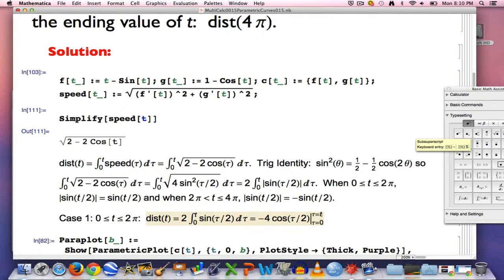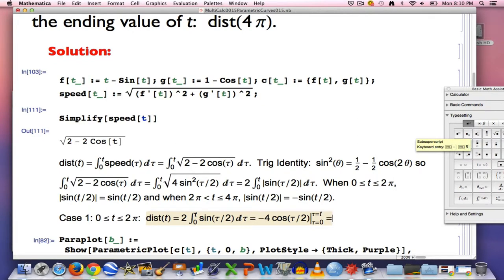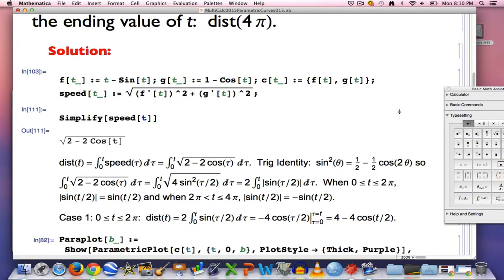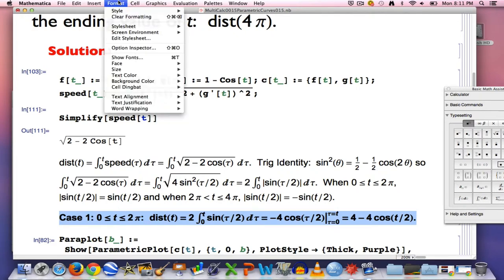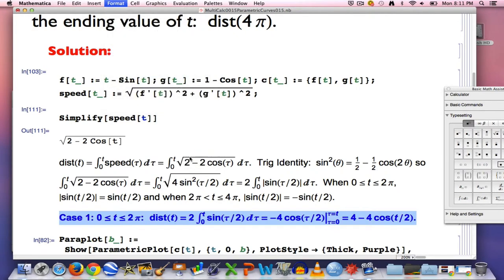Like this. And when you do that, you'll get, if you're careful, you'll get 4 minus 4cos(t/2). So there's the answer in case 1, when t is between 0 and 2π.